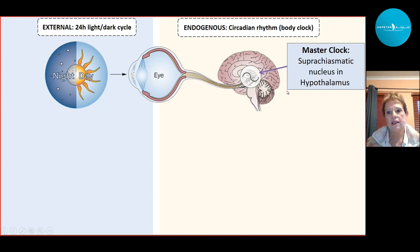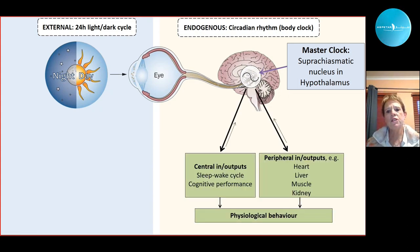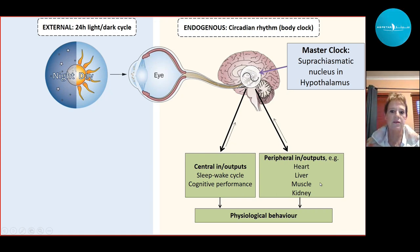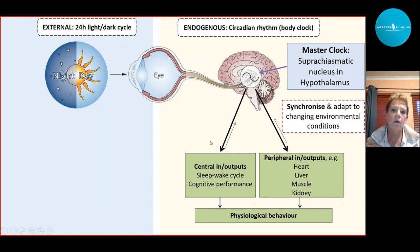Our master clock is situated in the hypothalamus, and we have central inputs and outputs, such as our sleep-wake cycle and cognitive performance. We also have little clocks in each cell in all tissue in our bodies, including the heart, liver, and muscle. This is where we understand that performance may be influenced by travel fatigue or jet lag. All of these central and peripheral inputs and outputs affect our physiological behavior and help us synchronize and adapt to environmental changes.